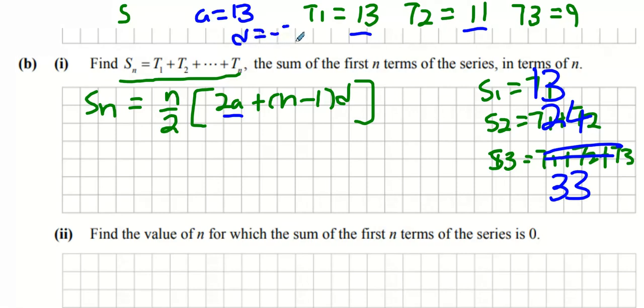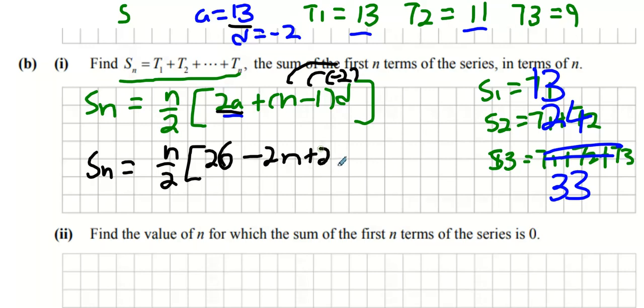So what we're going to do is Sn equals n over 2, 2 times a and a is 13 so that's going to be 26, n minus 1 times d, we know d is minus 2 so it multiplies in by the n to give you minus 2n and then plus 2. And then our Sn formula will be n over 2 and 26 plus 2 is 28, 28 minus 2n.